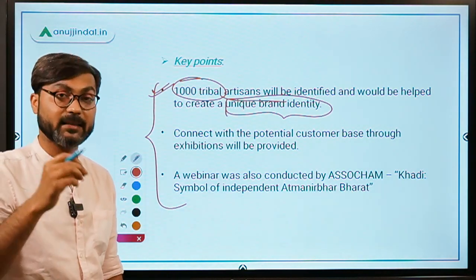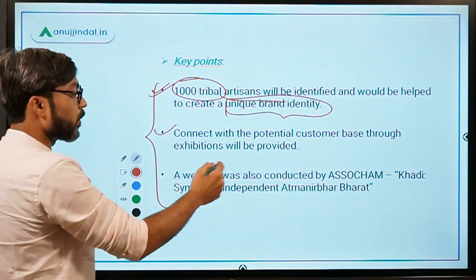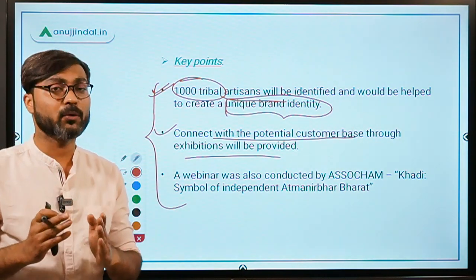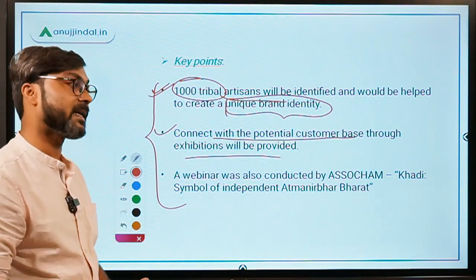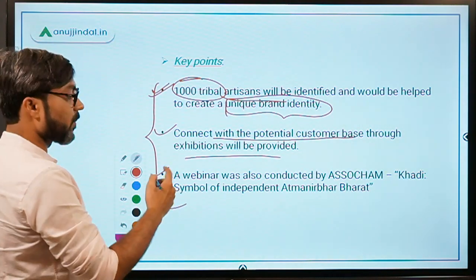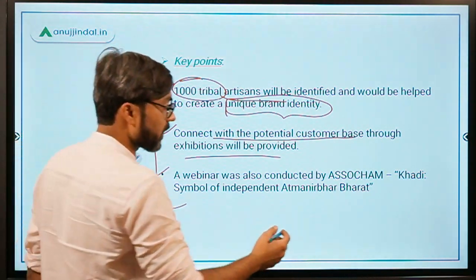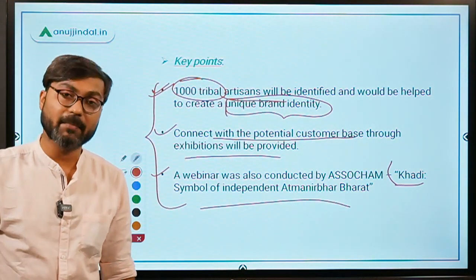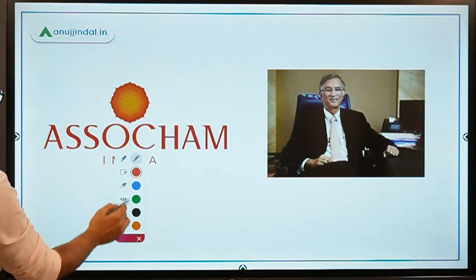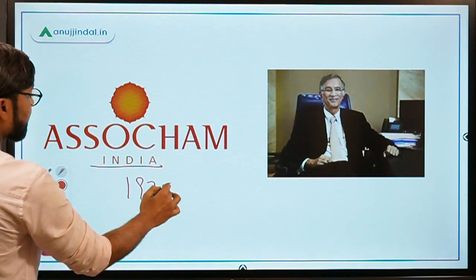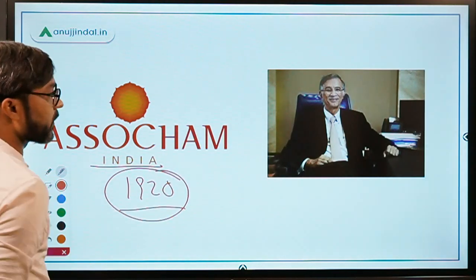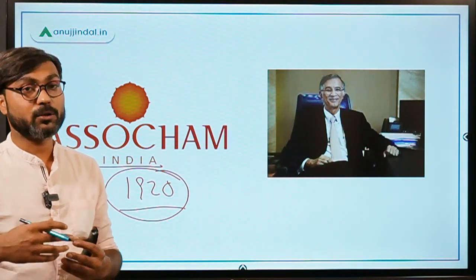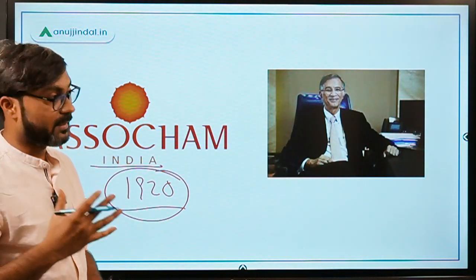The 1,000 selected tribal artists will be connected with a potential customer base through exhibitions. A webinar was also conducted by SOCHEN with the name 'Khadi: Symbol of Independent Bharat.' Regarding SOCHEN, it was established in the year 1920 with an objective to promote trade and commerce in India, remove trade barriers, and create a conducive environment for trade and commerce.